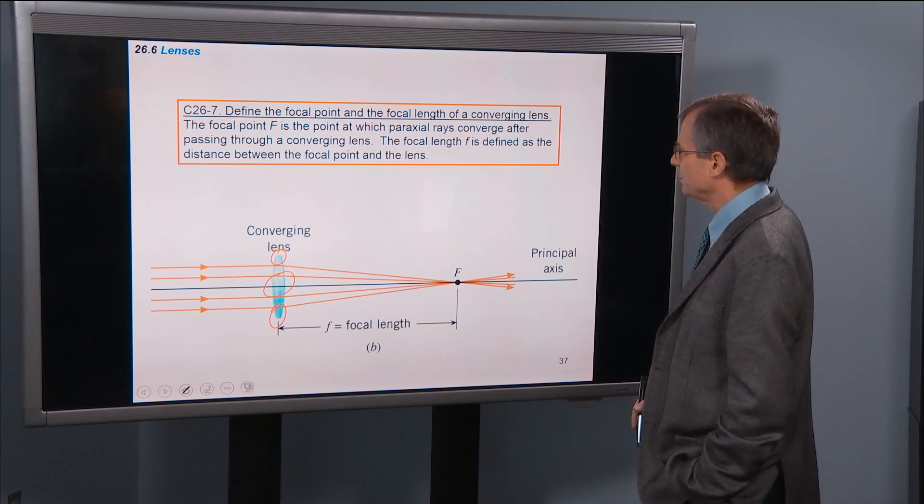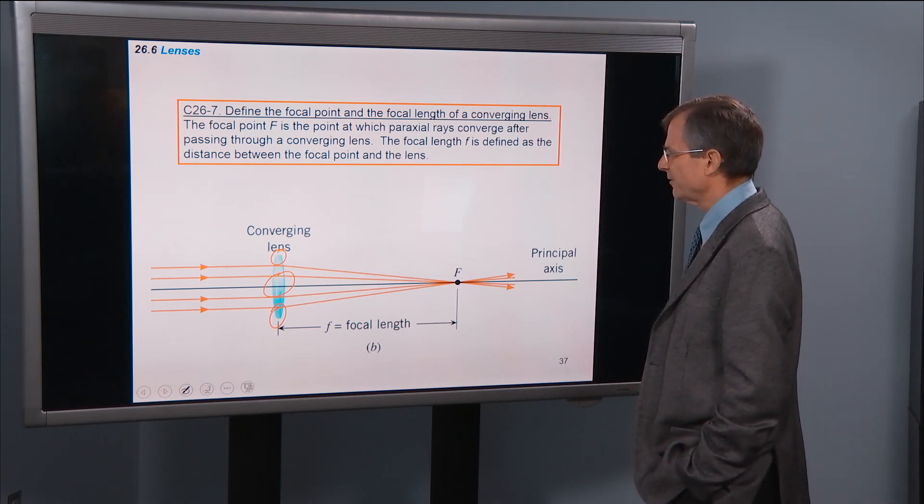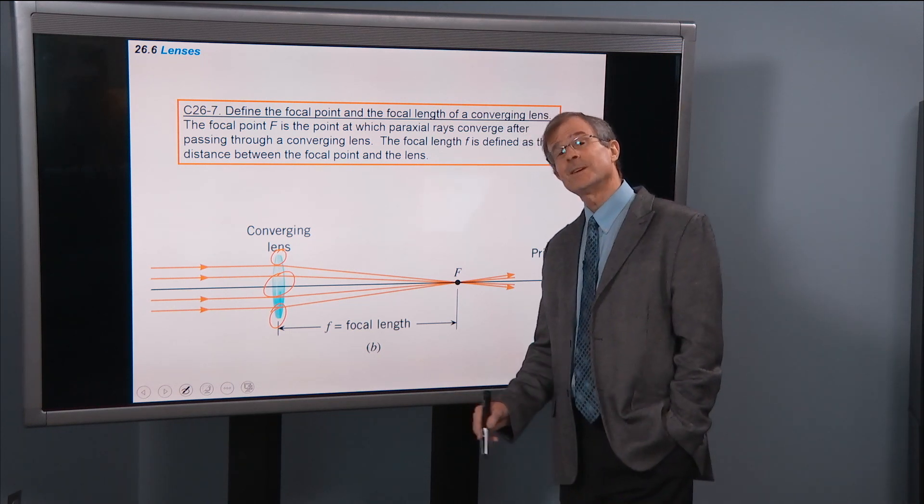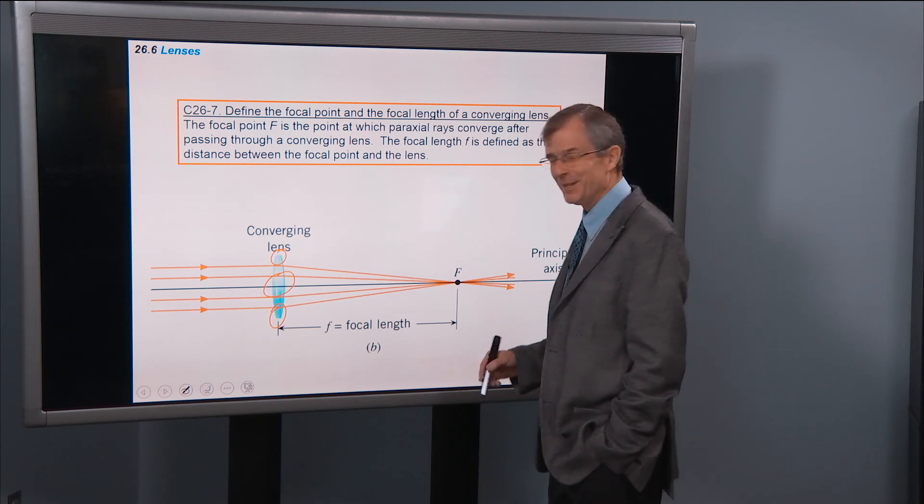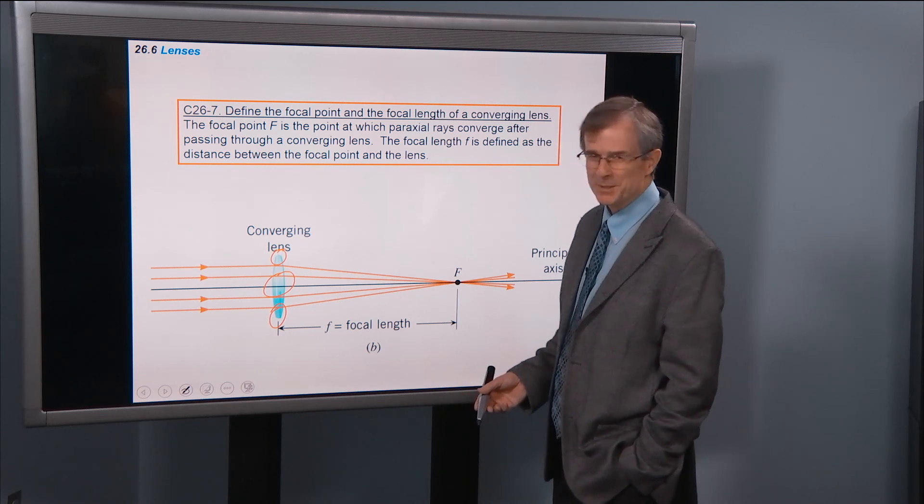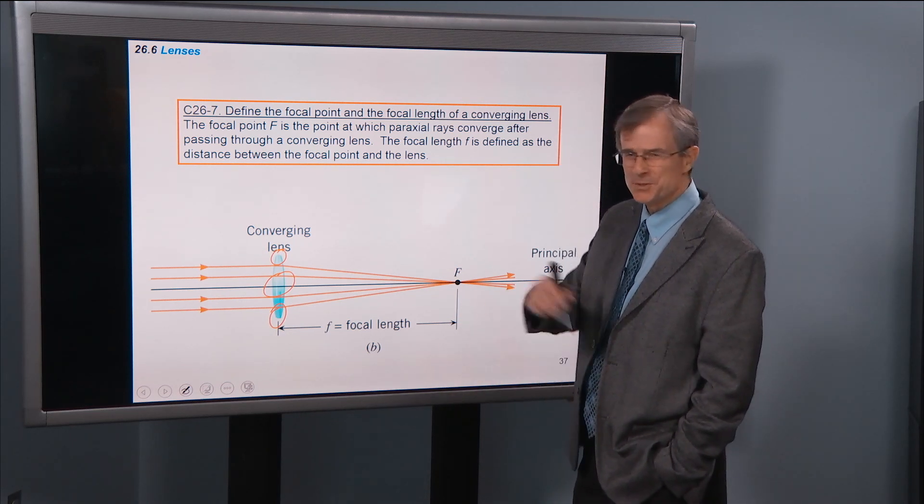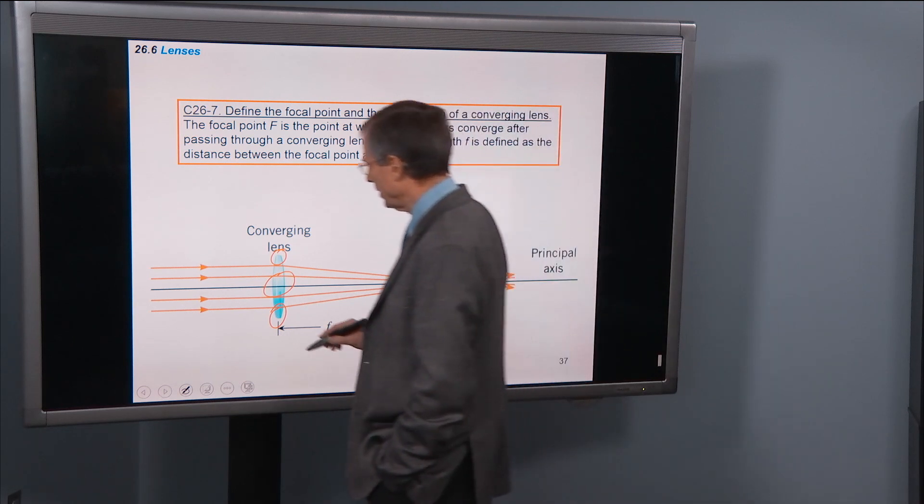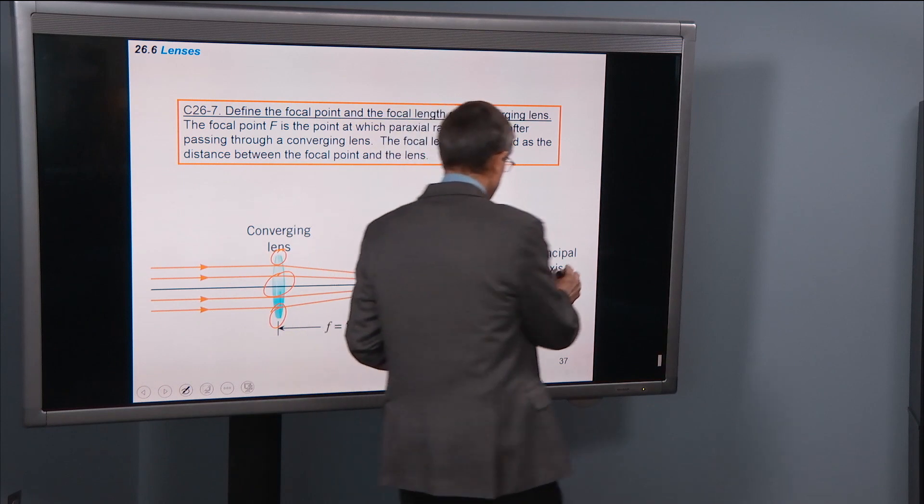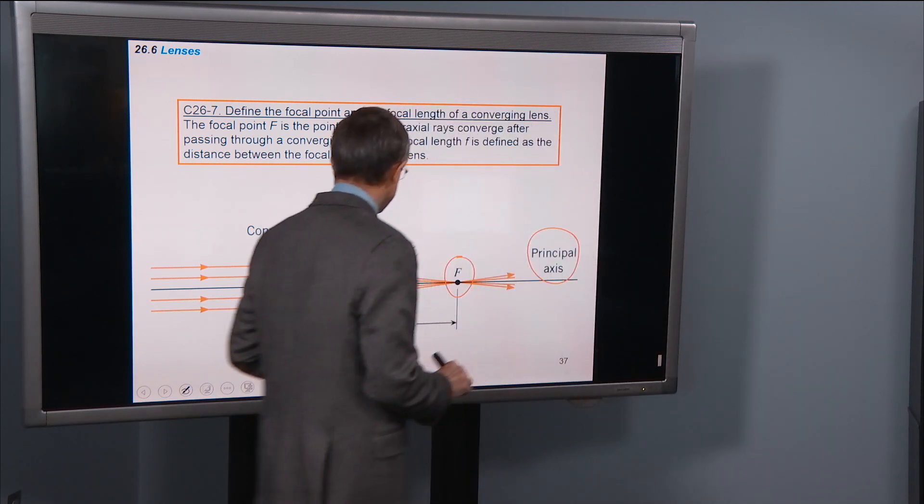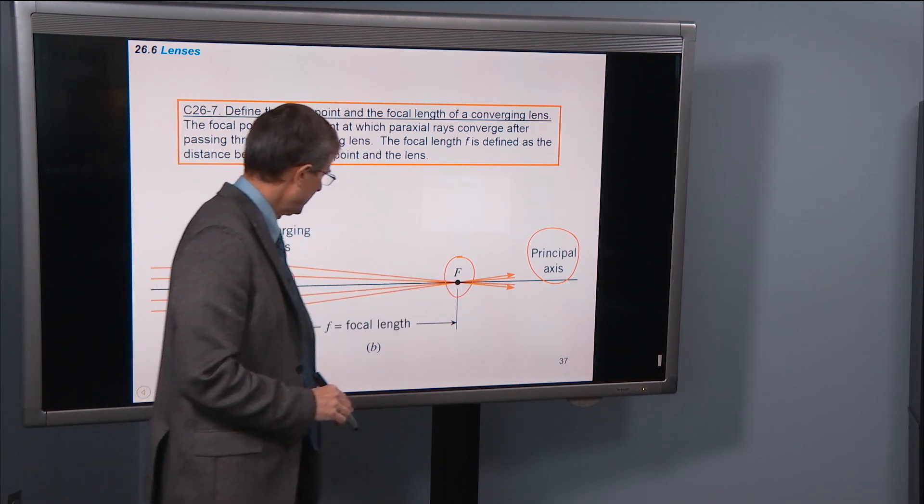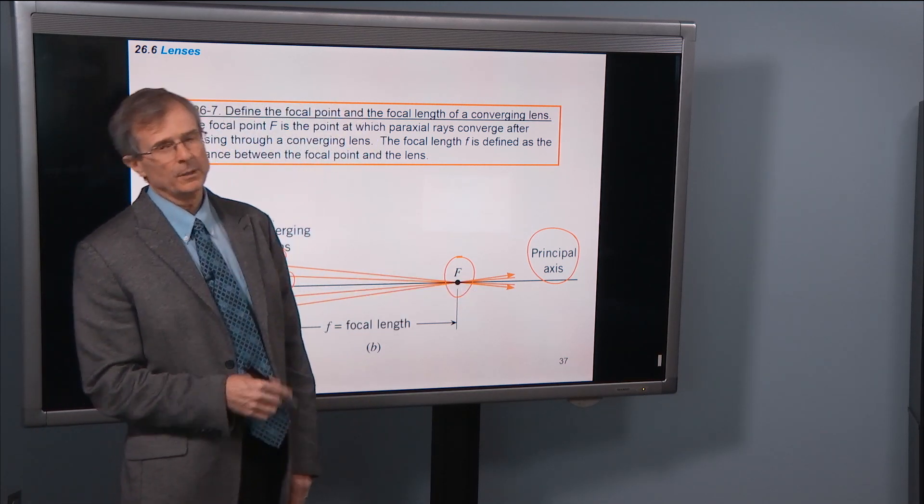The focal point is the point at which paraxial rays converge after passing through a converging lens. This is starting to sound a little bit familiar, because in the last chapter we talked about focal point, we talked about paraxial rays, and you'll see a lot of similarities between what we do in this chapter and the previous chapter. Focal point is where all these paraxial rays, they're close to the axis, close to the principal axis, and parallel to the principal axis, pass through the converging lens, and they come down and focus at this point called the focal point.